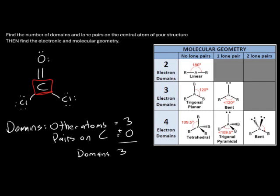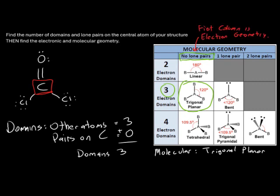With three electron domains, we look at the geometry table. Carbon has no lone pairs, so the molecular geometry is trigonal planar. The electronic geometry also comes from the first column of the table — with three domains it is also trigonal planar. Both the electron geometry and molecular geometry are trigonal planar for this molecule.